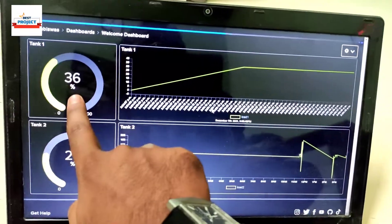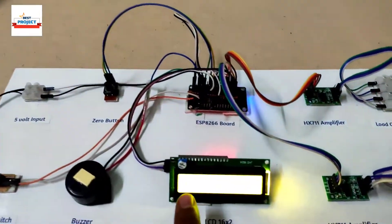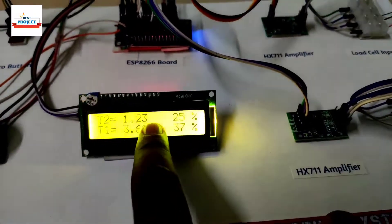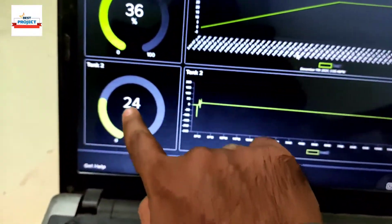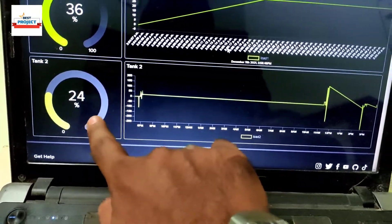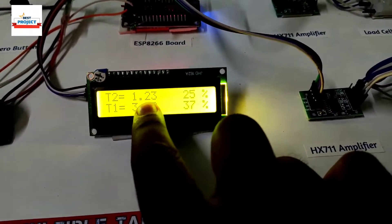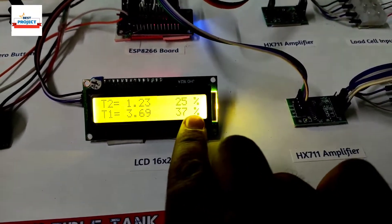You can see T1 is the bigger one and T2 is the smaller one. We can see all the readings at the same time live on the IoT server, Adafruit IoT server. You can also match the readings. T1 is 37% and T2 is 25%, the same as shown.